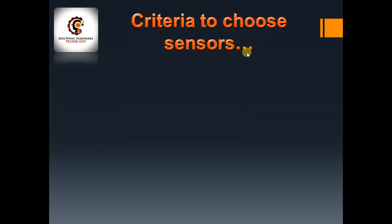Now let's talk about the criteria to choose sensors. Whenever we go to a market, the first thing we do is check how precise or how accurate the device we are buying is. If the device is not accurate at all, we won't buy it. Cost is secondary — the first thing you consider is how it works, and this applies to sensors as well.